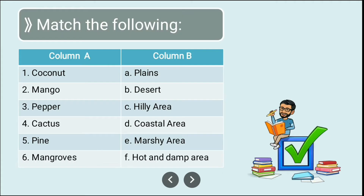Now let us move on to the next question: match the following. In Column A we have: coconut, mango, pepper, cactus, pine, and mangroves. In Column B we have: plains, desert, hilly area, coastal area, marshy area, and hot and damp area.